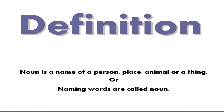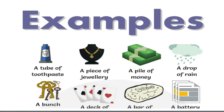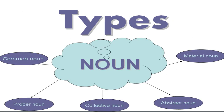You can understand it well with the help of the examples given in the picture — for example, a tube of toothpaste, jewelry, money, drops of rain, a bunch, a bar of soap, a battery, etc. I think now you know what a noun is.